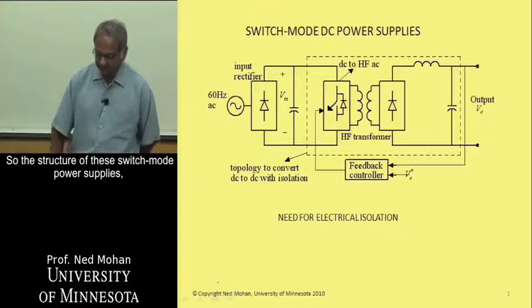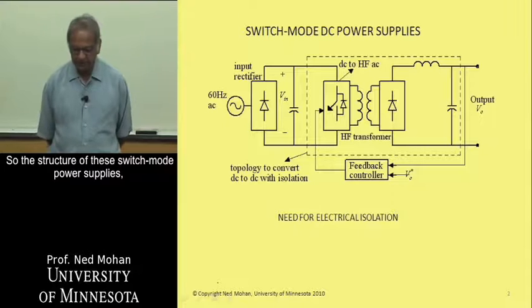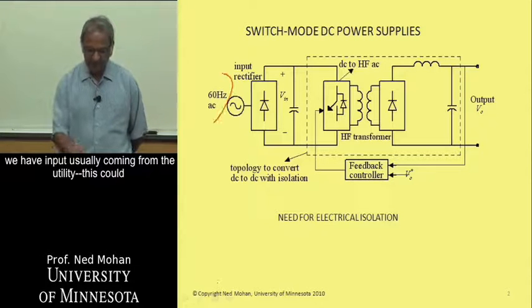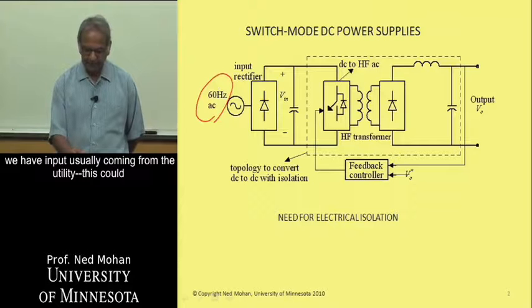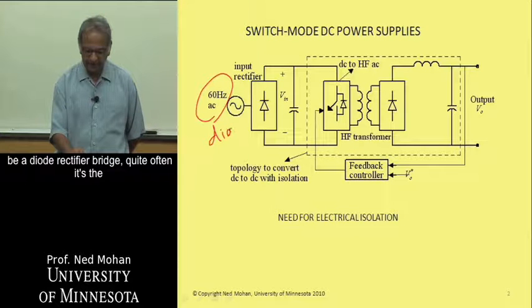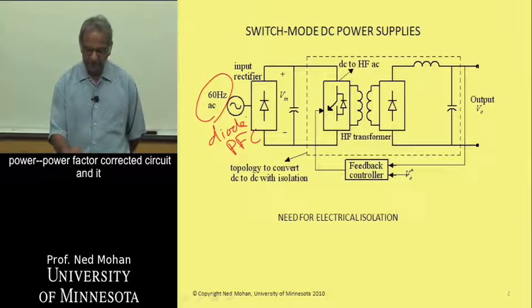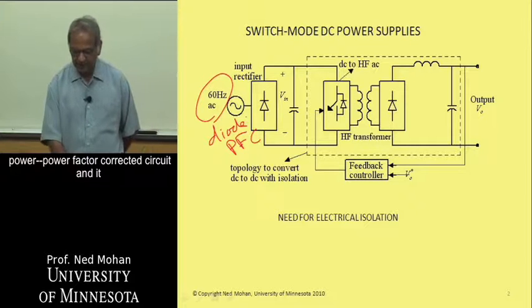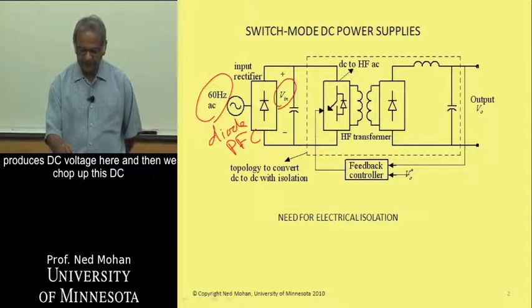So the structure of these switch mode power supplies, we have input usually coming from the utility. This could be a diode rectifier bridge. Quite often, it's the power factor corrected circuit. And it produces a DC voltage here.